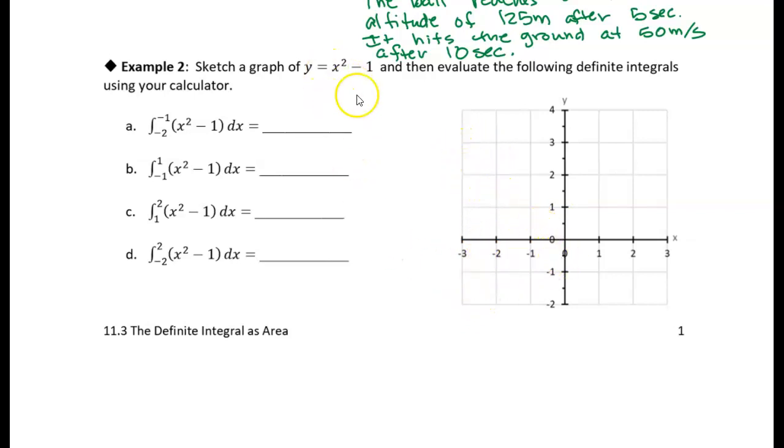We can plug in some points. If x = 0, then y = -1, so I can plot that point. I can find the x-intercepts by setting this equal to 0 and factoring into (x + 1)(x - 1), so it has x-intercepts at -1 and 1.